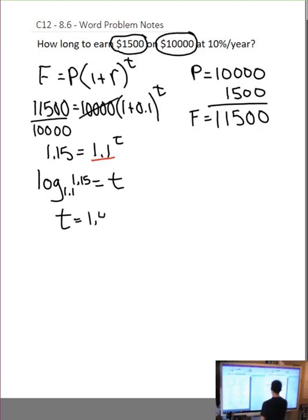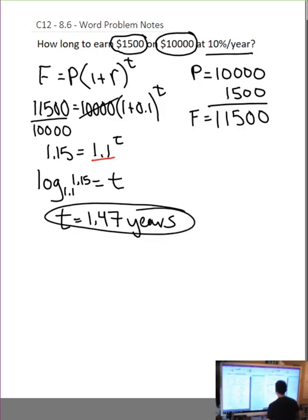And I get 1.47. Now, it's talking about how long, 10% per year, so that would be years. Now, just a quick logic check. 10% of 10,000 is approximately 1,000. So to make 1,500, it would take a little bit longer than one year. So again, as in all of our answers, a quick logic check at the end is absolutely necessary.